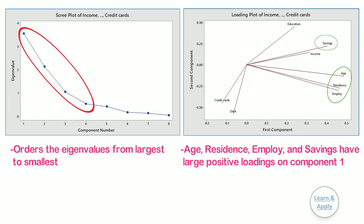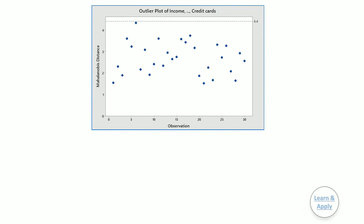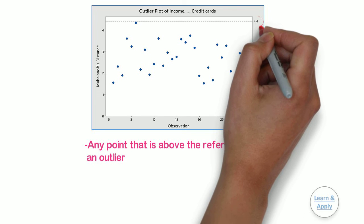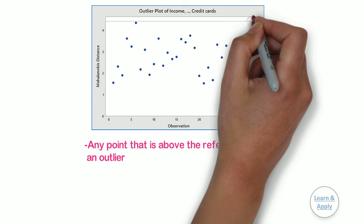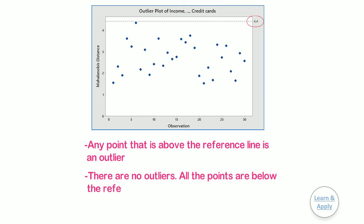Component 1 measures long-term financial stability. Debt and credit cards have large negative loadings on component 2, so this component primarily measures an applicant's credit history. Use the outlier plot to identify outliers — any point above the reference line is an outlier, and outliers can significantly affect the results of your analysis. In these results, there are no outliers; all points are below the reference line.